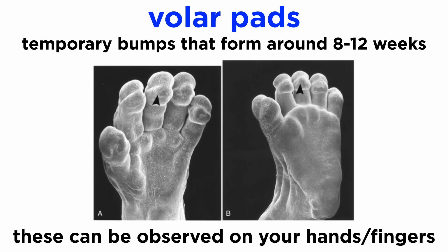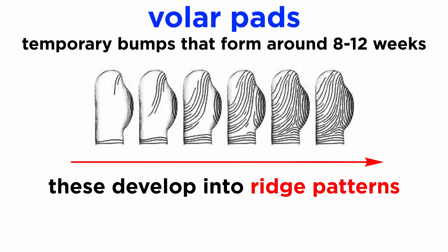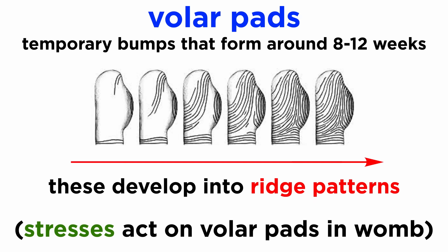You can observe them on your hand — the bumps on the tips of the fingers, below the fingers, and the bumps surrounding the palm. In the gestational period, they look like localized swellings and act as a canvas for the formation of ridge patterns. There are some growth and shape stresses in the womb acting on these volar pads, and the direction of these stresses influences the direction in which the ridges will flow.